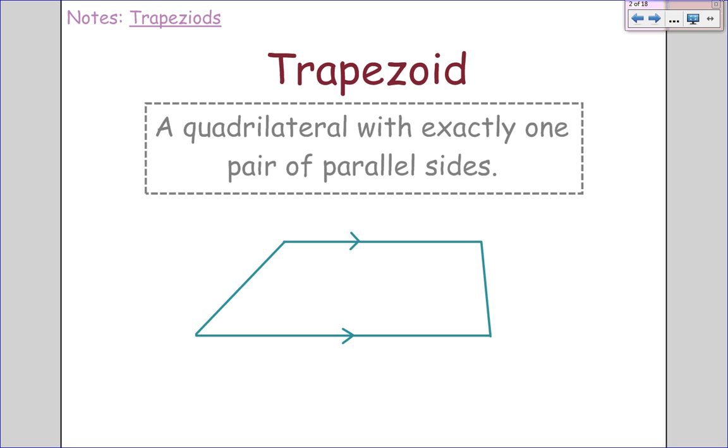A trapezoid is a quadrilateral with exactly one pair of parallel sides. If you notice the picture here, you only have one side, one set of pairs that are parallel to each other. The other two sides just connect and are not parallel to each other.